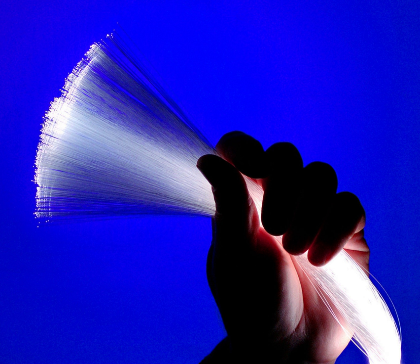Users and network administrators typically have different views of their networks. Users can share printers and some servers from a workgroup, which usually means they are in the same geographic location and are on the same LAN, whereas a network administrator is responsible to keep that network up and running. A community of interest has less of a connection of being in a local area, and should be thought of as a set of arbitrarily located users who share a set of servers, and possibly also communicate via peer-to-peer technologies.